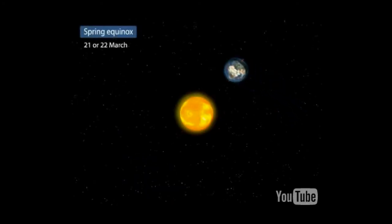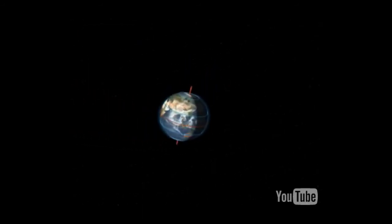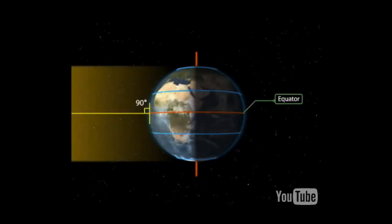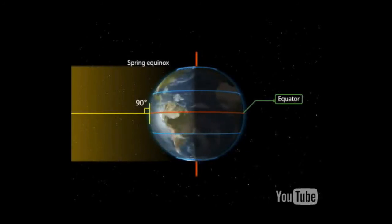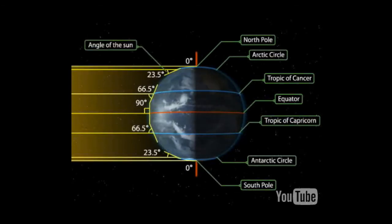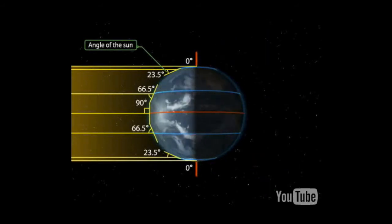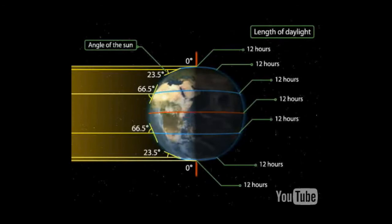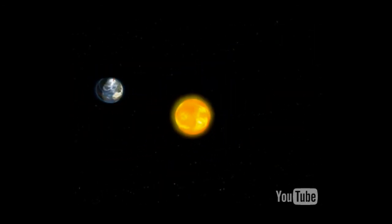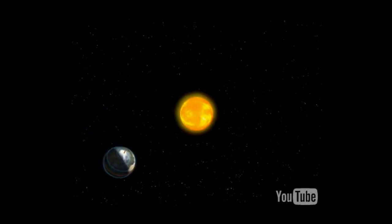At the spring equinox on the 21st or 22nd of March, the overhead sun is over the equator, which receives the largest amount of solar radiation. The northern hemisphere is in spring while the southern hemisphere is in autumn. The angle of the sun decreases towards the poles. On this day, both hemispheres receive a similar amount of solar radiation and the length of day and night is the same everywhere. After this day, days are longer than nights in the northern hemisphere, and shorter in the southern hemisphere.